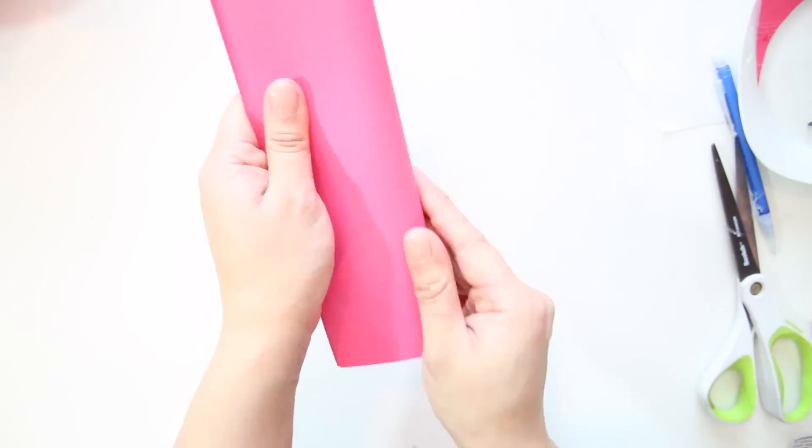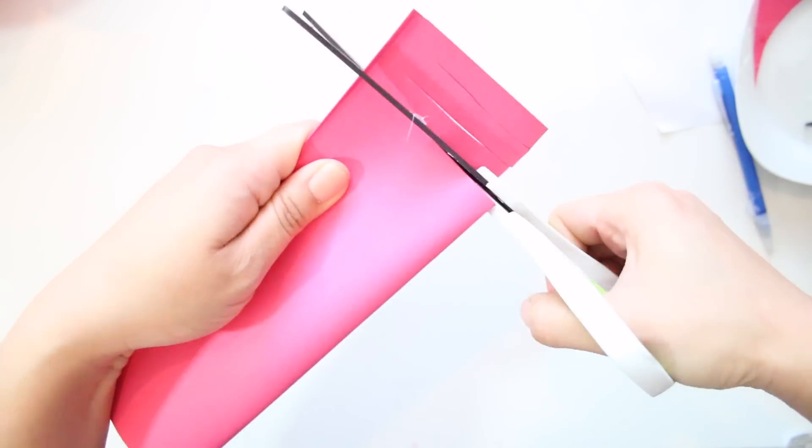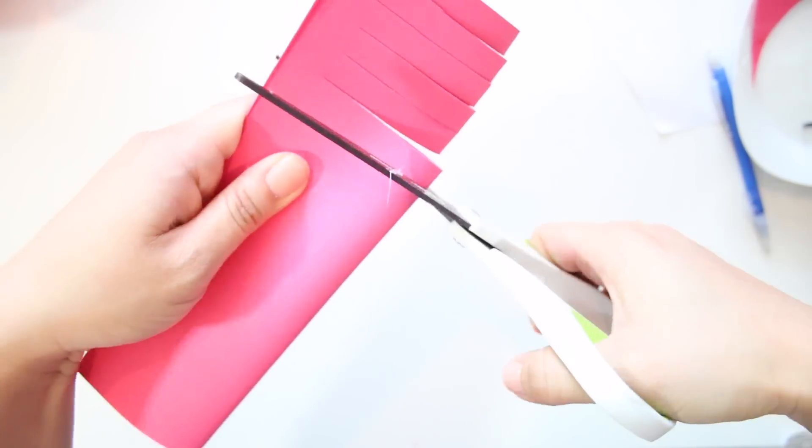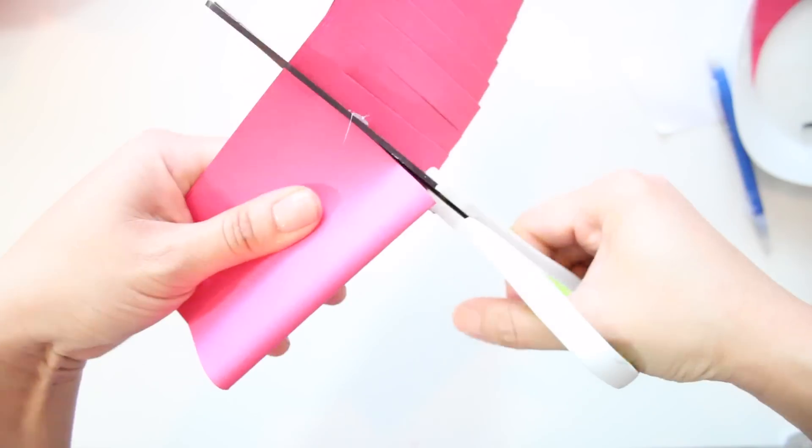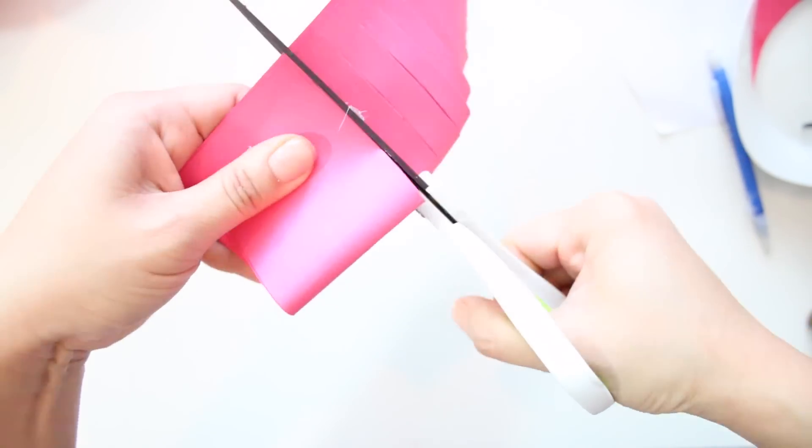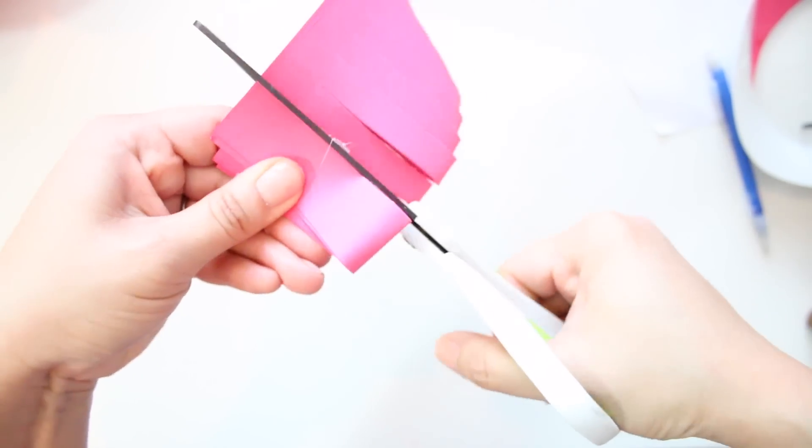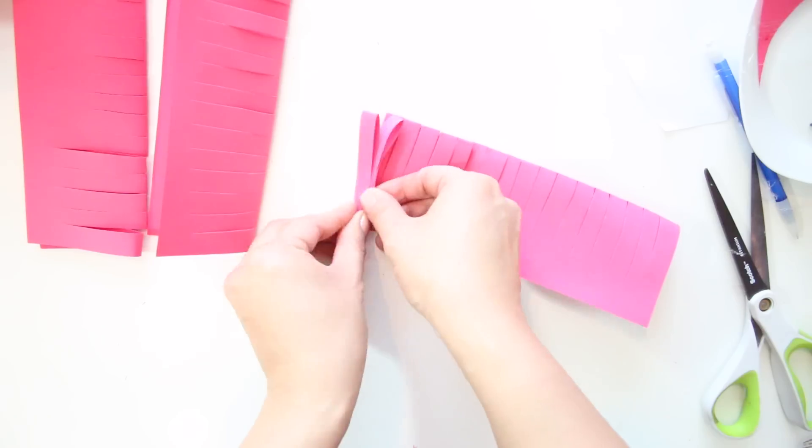To make the center of the flowers, take the last 3 sheets of half sheets, fold it in half and cut a fringe, making sure to cut from the side that's folded. Be sure not to cut all the way through. Leave about half an inch left.